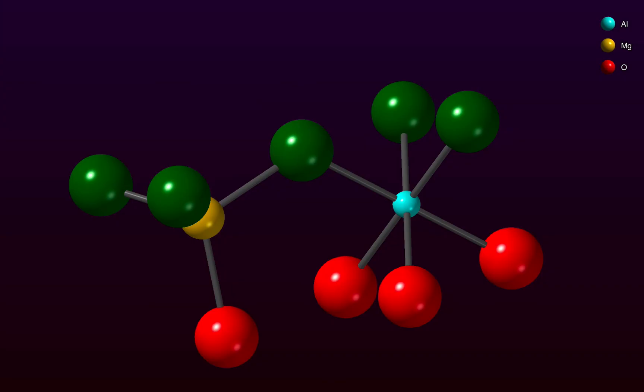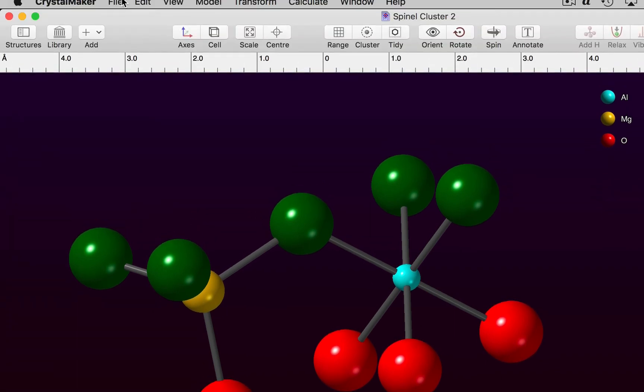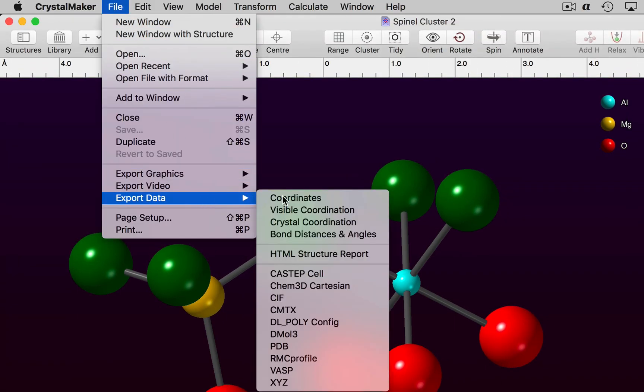Finally, for more detailed information, you can use the File menu's Export Data command. And you'll find commands available to export text files with information listing coordinates of the atoms, coordination groups, and detailed tables of bond distances and angles for every site in the structure.